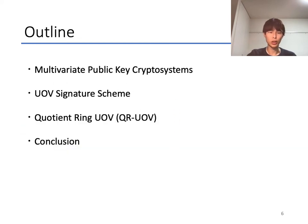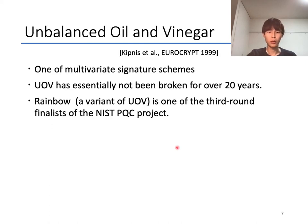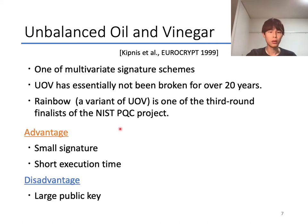Next, about UOV signature scheme. Unbalanced oil and vinegar, which is called UOV, is one of the multivariate signature schemes, and it has withstood various attacks for about 20 years. Actually, Rainbow, which is one of the variants of UOV, was selected as one of the third-round finalists of the NIST PQC project. UOV is highly evaluated for its small signature and short execution time, but it has a problem that its public key size is much larger than other candidates of PQC.